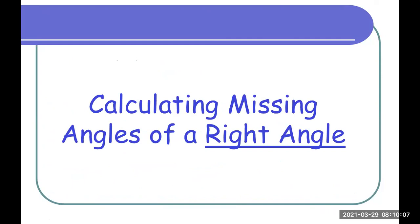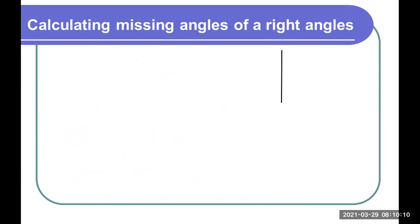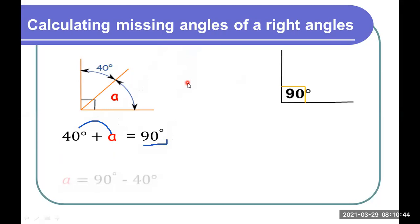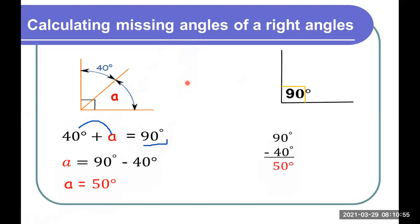First, let's start with calculating the missing angles of a right angle. Remember that in a right angle, the measure of the angle that is formed is 90 degrees. So if we want to find the missing angle — let's say 40 degrees and another angle forming a right angle — we write the mathematical equation: 40 degrees plus A equals 90 degrees. We can rewrite this using subtraction: A equals 90 degrees minus 40 degrees, so A equals 50 degrees.